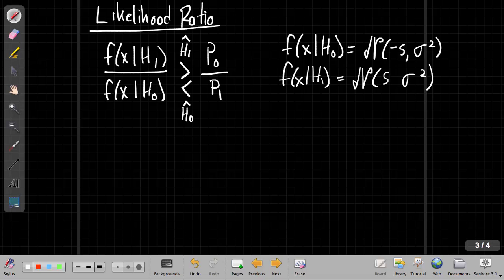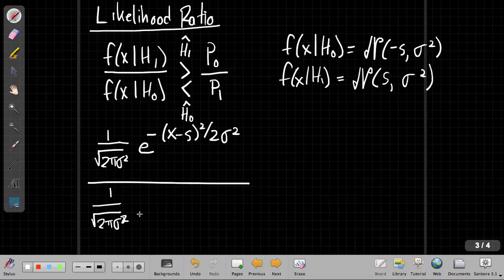Okay, so let me fill in the actual expressions for the Gaussians here. So for H1, I have 1 over square root 2 pi sigma squared, e to the minus x minus S quantity squared over 2 sigma squared. For the denominator, I have the conditional PDF for the same variance, but now the new mean is minus S. So minus a minus S becomes a plus S up here. And on the right-hand side I still have the ratio of the prior probabilities.